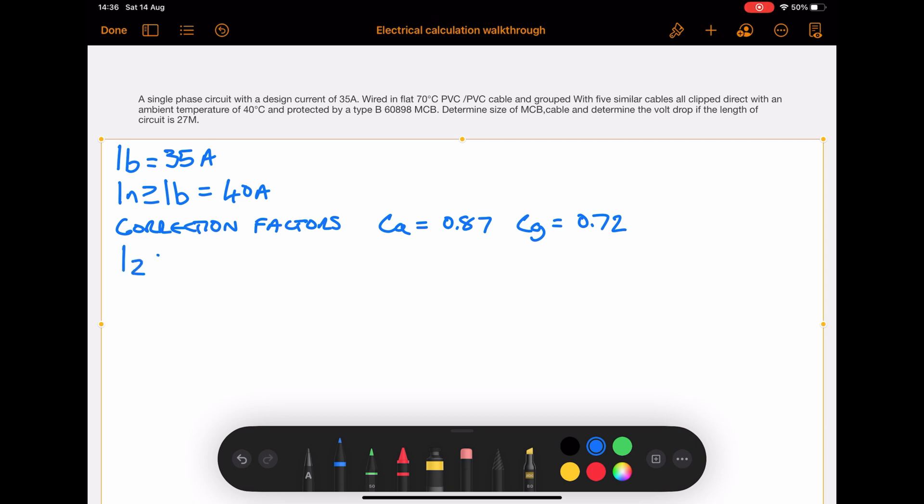Then we need to determine the IZ. The IZ is greater than or equal to the IT which is a tabulated value for the cable, so IT is equal to IN divided by the correction factors which is CA and CG. So IN is divided by CA multiplied by CG. We'll enter the values into the calculation.